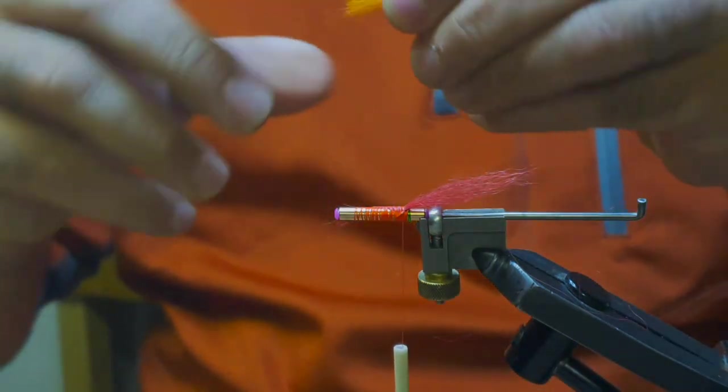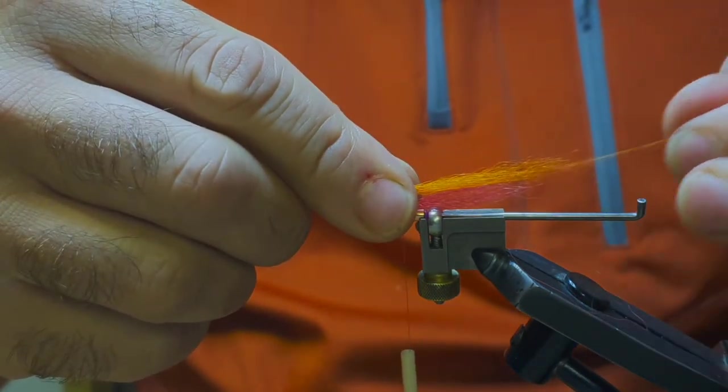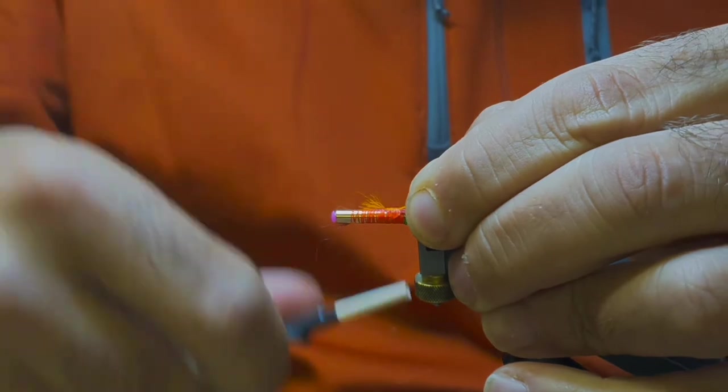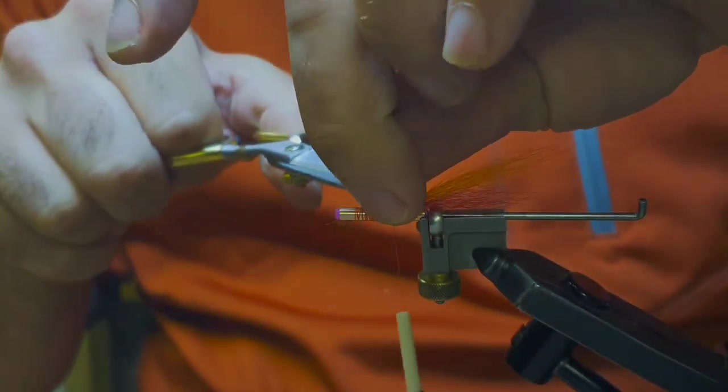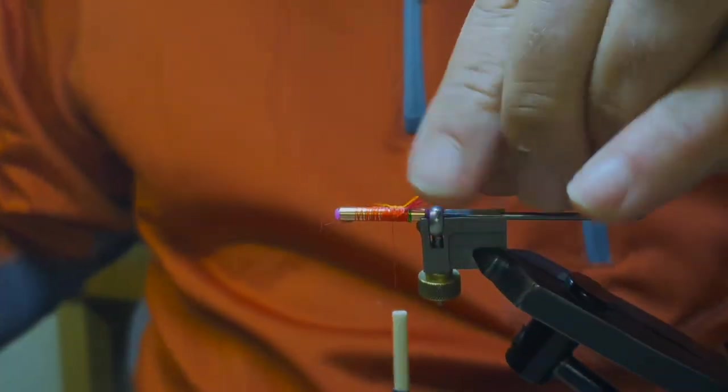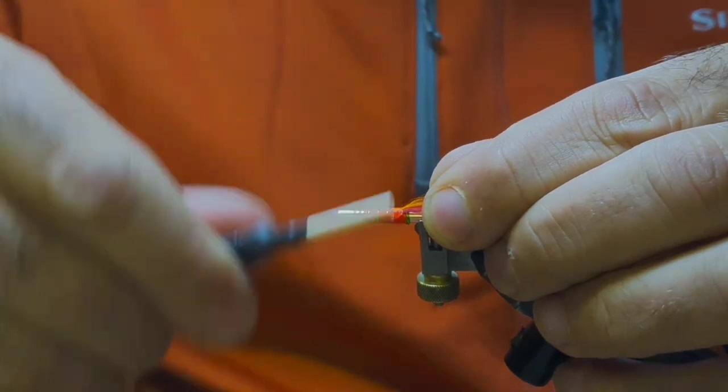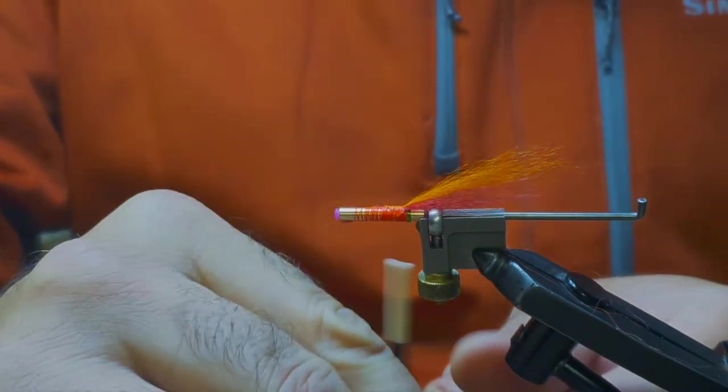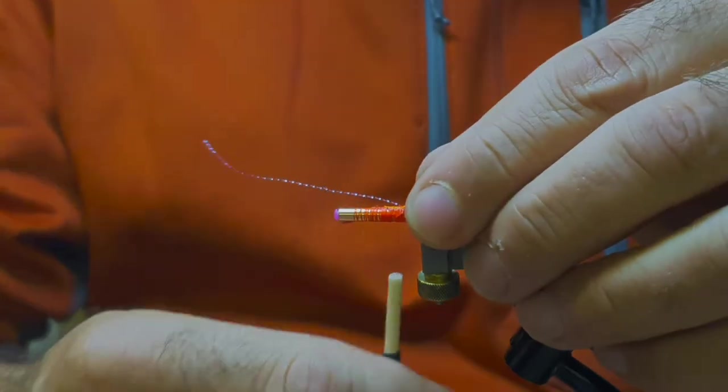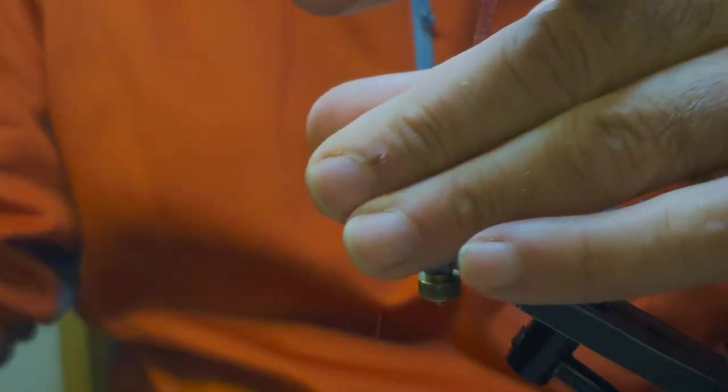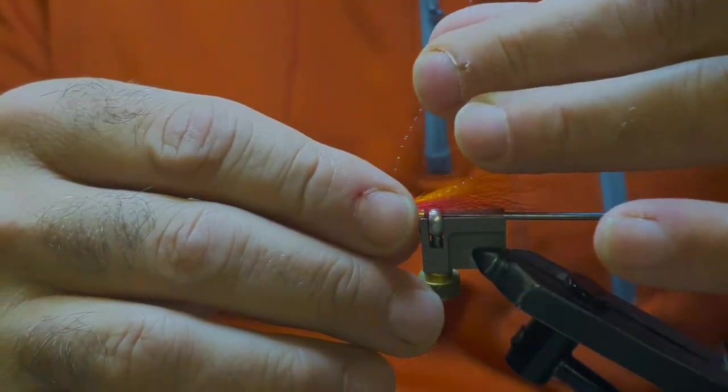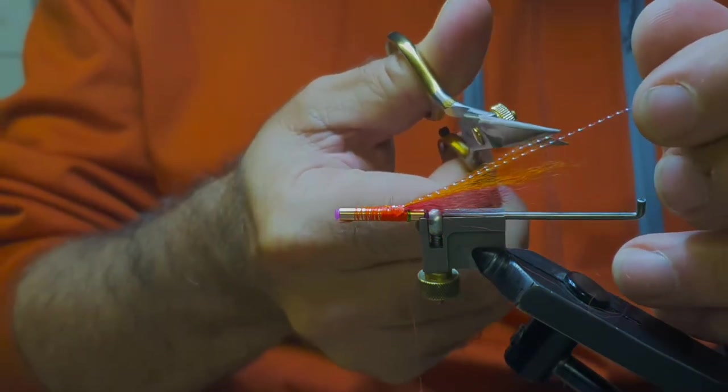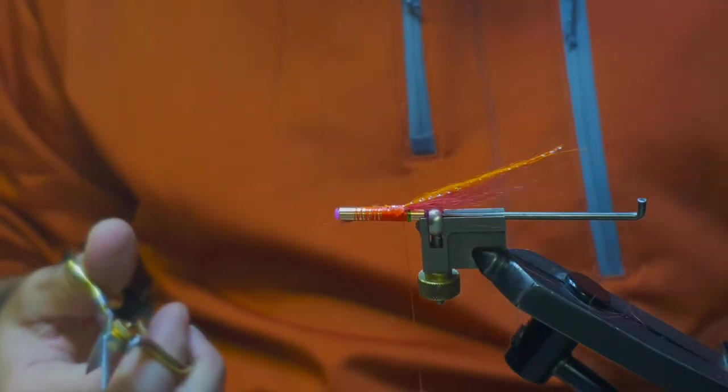So that's just a wee bit longer. That's where I come in with one strand of the crystal flash doubled over. Tie that in, couple of turns, and then back over on itself. And then just snip that just short of the end of the orange. There we go.